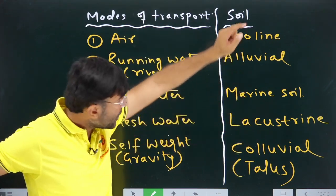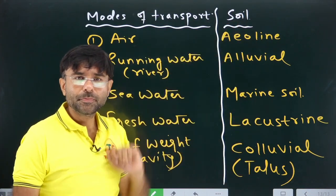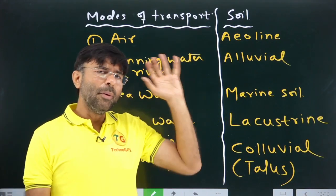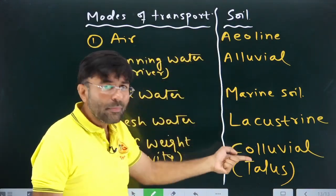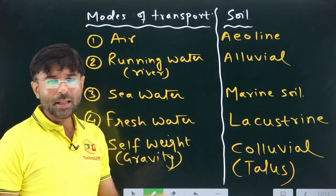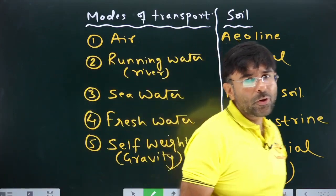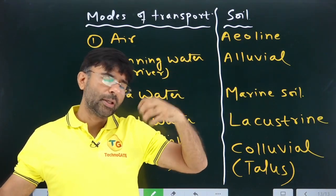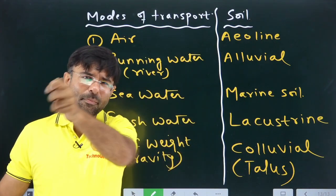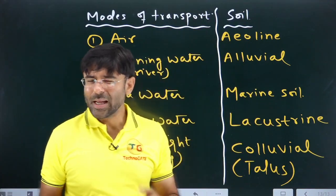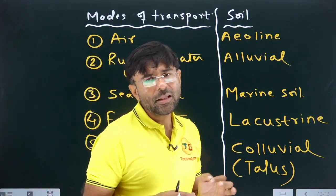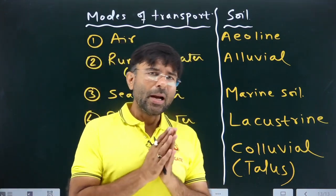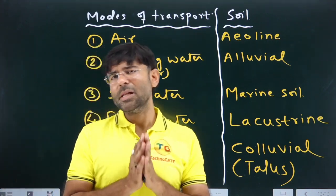The soil you are seeing in front of your house will be under any of these categories — 100%. So this was the science behind the formation of soil and how the soil is actually formed. In your GATE exam, any of these names can be asked, but the chances are bare minimum. However, it can be a surprise — you might see a question like: if the soil is obtained due to transportation by air, then the soil will be named as aeolian. This was the first chapter of soil mechanics: formation of soil.